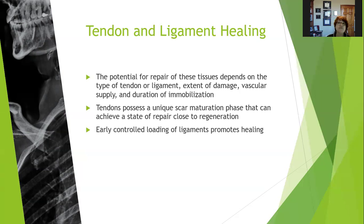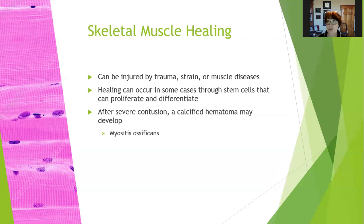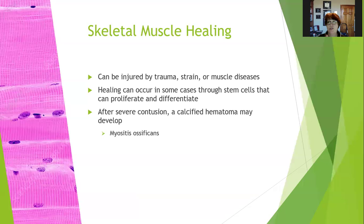Early controlled loading of ligaments promotes healing, which fits into our plan of including exercise as the primary part of rehabilitation. Skeletal muscle heals great — it can be injured by trauma, strain, or muscle diseases, and healing can occur in some cases through stem cells that can proliferate and differentiate. Muscles still have stem cells, so you can make new muscle — isn't that awesome? Sometimes after a severe contusion, you can get a calcified hematoma called myositis ossificans, which heals more slowly because the calcified part has to dissolve. That's usually from deep muscle trauma, but those injuries do heal — they just take a long time.